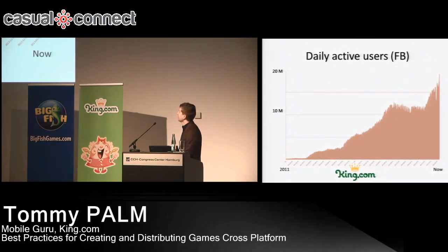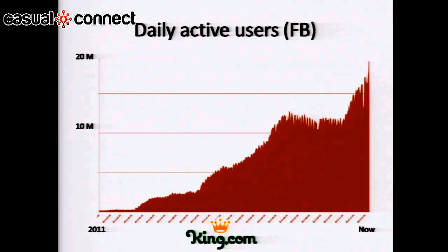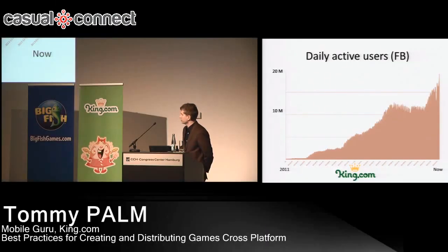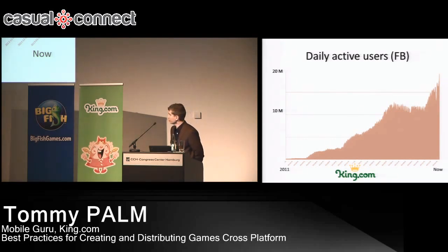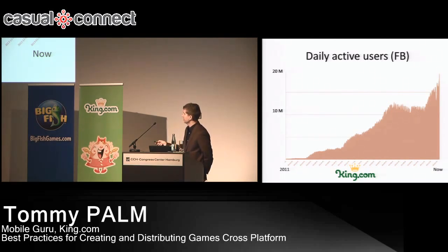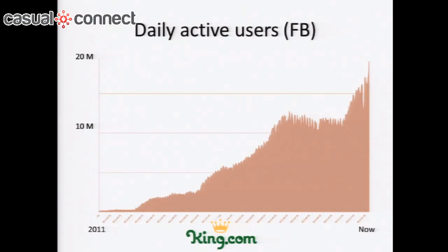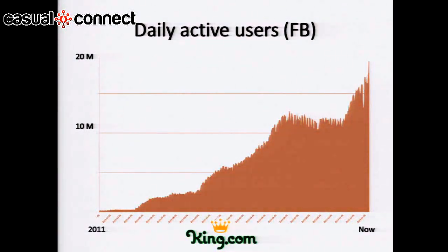This is a chart of the daily active users on Facebook for King's games according to app data. King has been around for more than a decade, but it wasn't until the start of 2011 when we started making games for Facebook. During this period we've made seven games for Facebook and grown to about 20 million daily active users. You can see some really important milestones here — Bubble Witch Saga was launched on Facebook, and in November, Candy Crush Mobile was released for smartphones and iPads. That's the power of cross-platform for the slant of this curve.